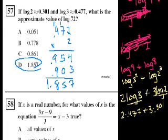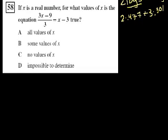Problem 58. If x is a real number, for what values of x is the equation 3x minus 9 over 3 equals x minus 3 true? Well, if x is a real number, let's just play around with it. Maybe it's just a truism. Let me write it. 3x minus 9 over 3 equals x minus 3.